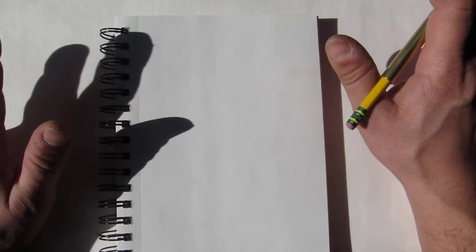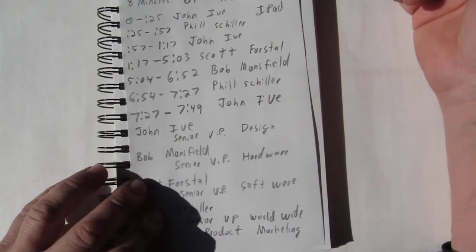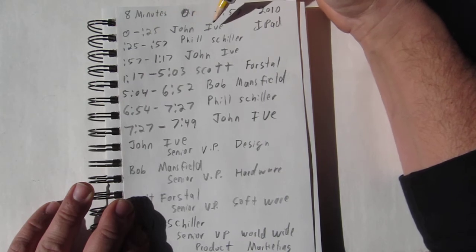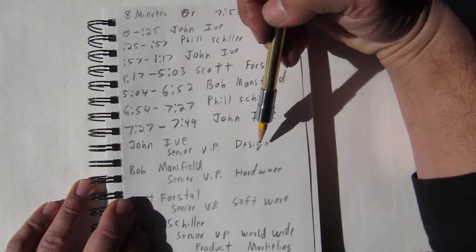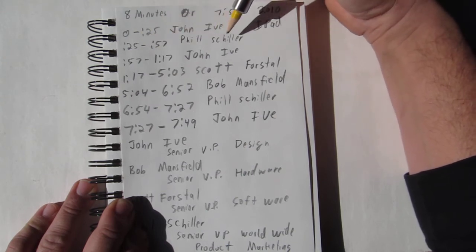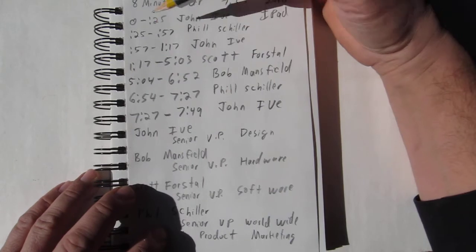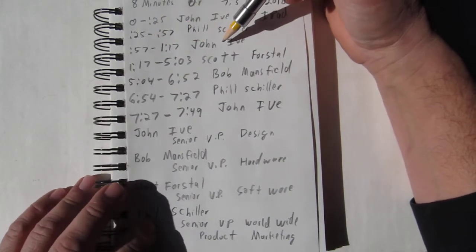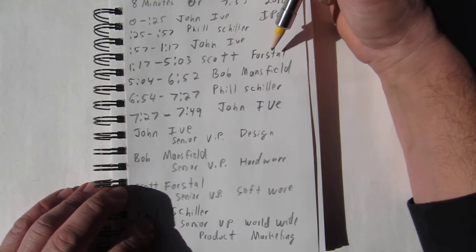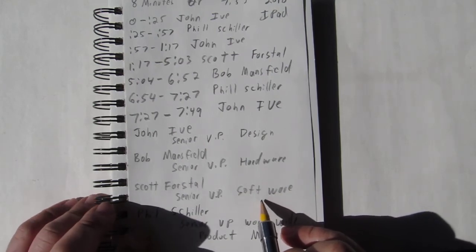Okay, did you watch the video? Great. Let's start off. The video is eight minutes and we're going to go over who spoke and what they mean to the Apple corporation. For the first 25 seconds, John Ive spoke - senior vice president of design. Then from 25 seconds to 57 seconds, Phil Schiller spoke - senior VP worldwide product marketing. From 57 seconds to one minute 17 seconds, John Ive again. From one minute 17 seconds to five minutes three seconds, Scott Forstall - senior VP of software on the iPhone and other products.